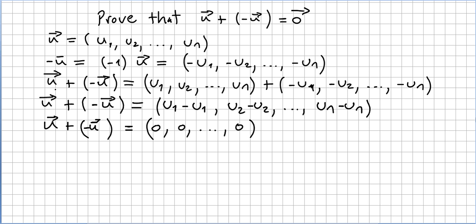So what is u plus minus u? That will be the vector, this vector here, u1, u2, u n plus this vector here, minus u1 minus u2 minus u n.